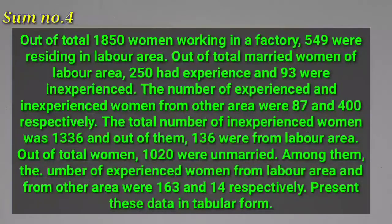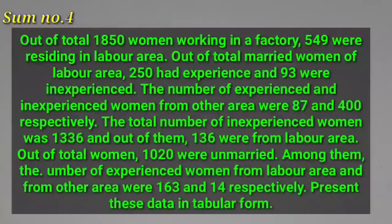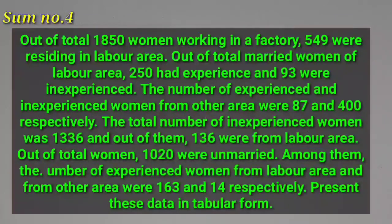So friends, in this sum we have 3 different types of attributes given: experienced/inexperienced, married/unmarried, and residing from labour area or other area. So we have 3 different attributes to work with.